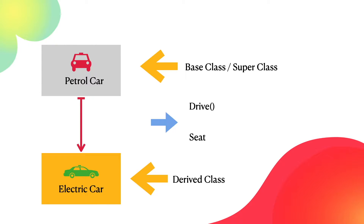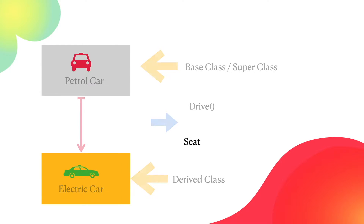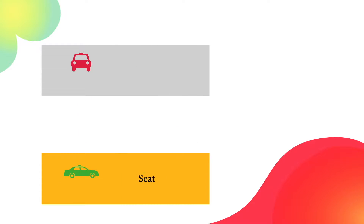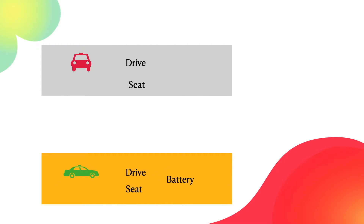In this case, the petrol car is a base class or a super class. The derived class is the electric car. This is how we can do it. In this case, drive is a common functionality.